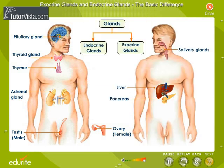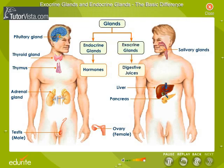Another major difference between these two types of glands is the nature of their secretions. Endocrine glands secrete hormones, whereas exocrine glands secrete digestive juices and other excretory products like sweat.